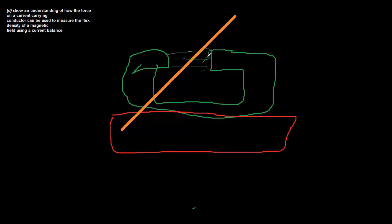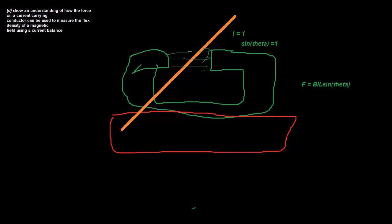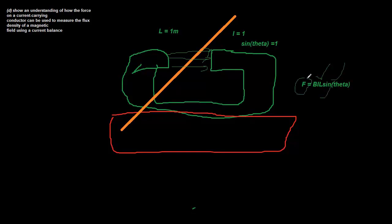So what are we missing? We have I, we have L — which is the amount of the wire inside the magnetic field, so let's just for simplicity's sake say L equals one, one meter — so we have I, we have L, and we also have sinθ. So what are the only two variables we're missing? We're only missing F and B. So if we could find out the force acting on the wire right now, we can also know what the magnetic field density is just by rearranging this equation.